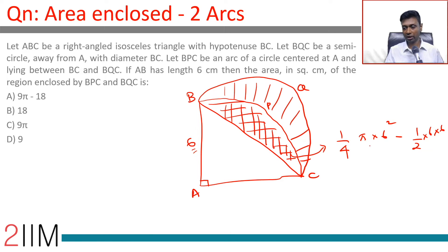This segment is one-fourth of pi into 6 square minus half into 6 into 6. So, sector minus triangle gives us this segment, which is one-fourth of 36 pi, 9 pi minus 18.